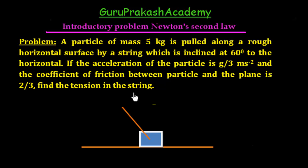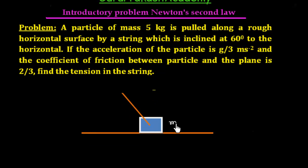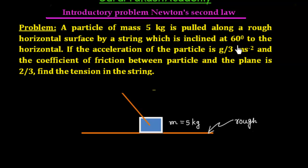This problem is from Newton's Second Law of Motion. A particle of mass 5 kg is pulled along a rough horizontal surface by a string inclined at 60 degrees to the horizontal. So this object has a mass of 5 kg kept on a rough surface. The inclination angle theta is given as 60 degrees.